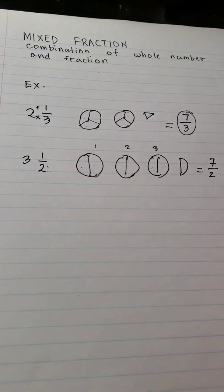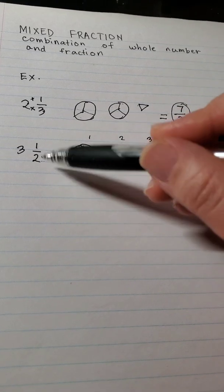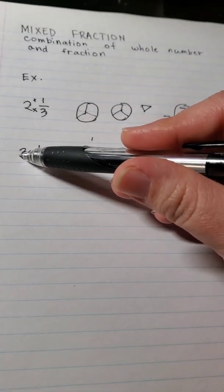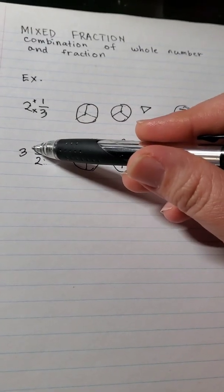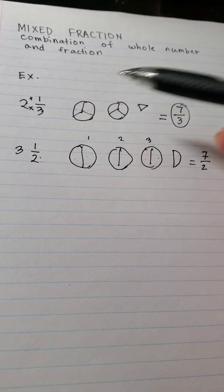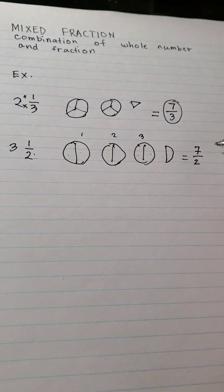Or you can also multiply the denominator with the whole number, 2 times 3, 6 plus 1. The numerator equals 7, which is 7 over 2.